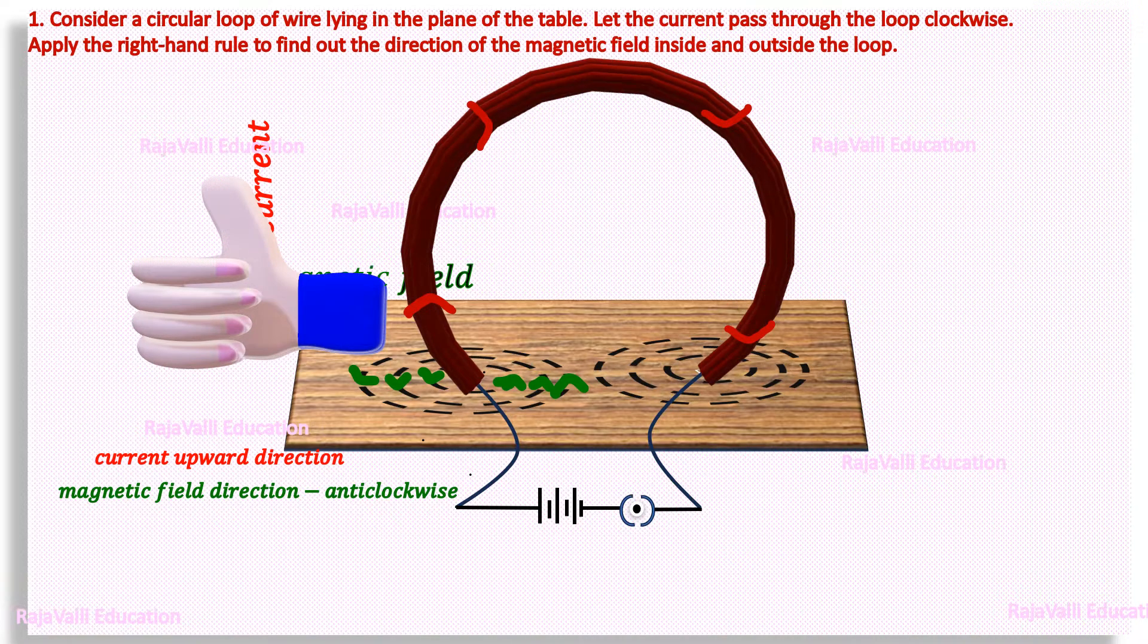Next, the current flows from left side to right side through the circular loop of wire. Here also, we have to use right hand thumb rule to find out the direction of the magnetic field lines.